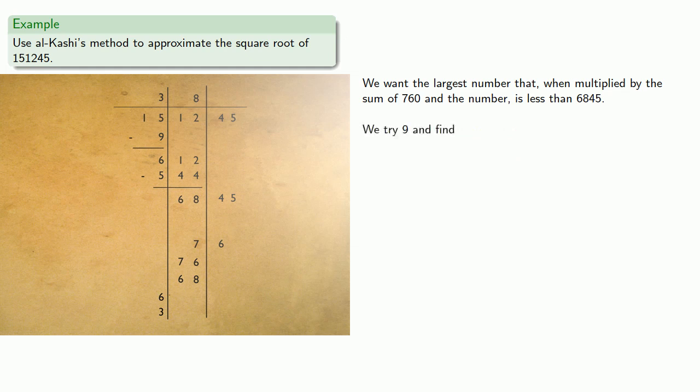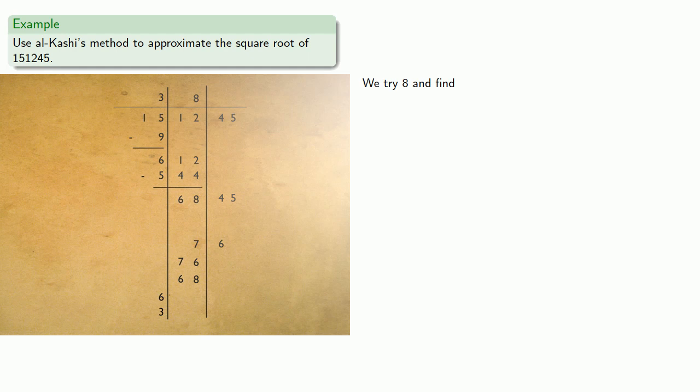We try 9, and find 9 times 760 plus 9 is too much. We try 8, and find 8 times 760 plus 8 works. We subtract.